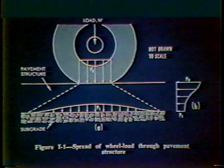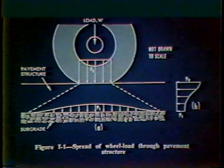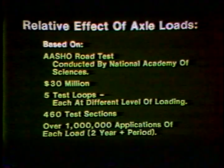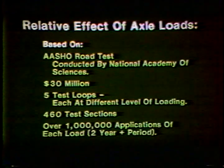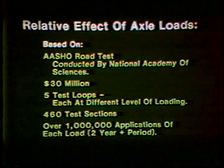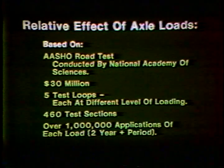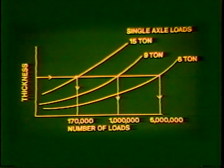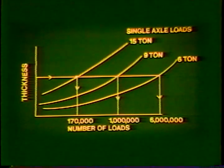Fatigue damage in a pavement depends on the weight and arrangement of axle loads. The AASHTO Road Test in Ottawa, Illinois, is the primary source of good research information on the relative effects of axle loads and arrangements on different pavements. During this $30 million road test, trucks with fixed axle weights were driven around sections of road constructed in loops about one mile long. There were five loops containing about 460 pavement sections with traffic of typical single or tandem axles. Over one million loads were applied over a two-year-plus period on each section. This is a chart summarizing some of the results of the AASHTO Road Test.